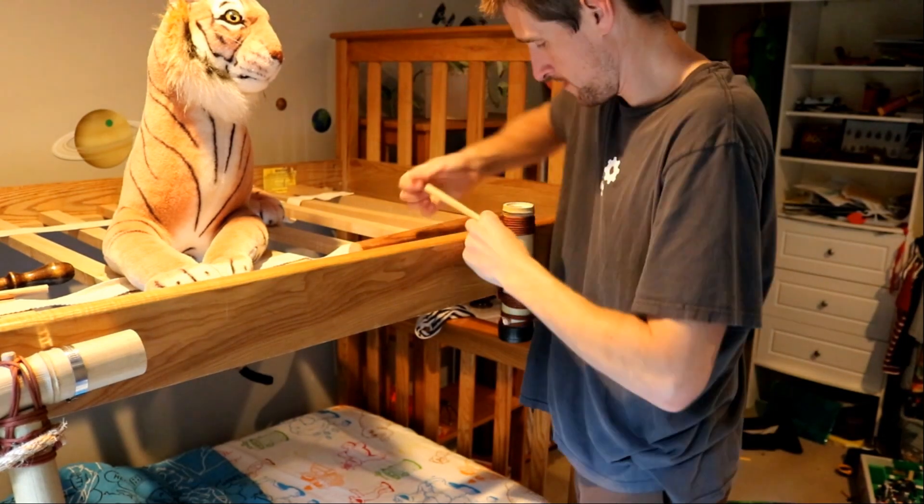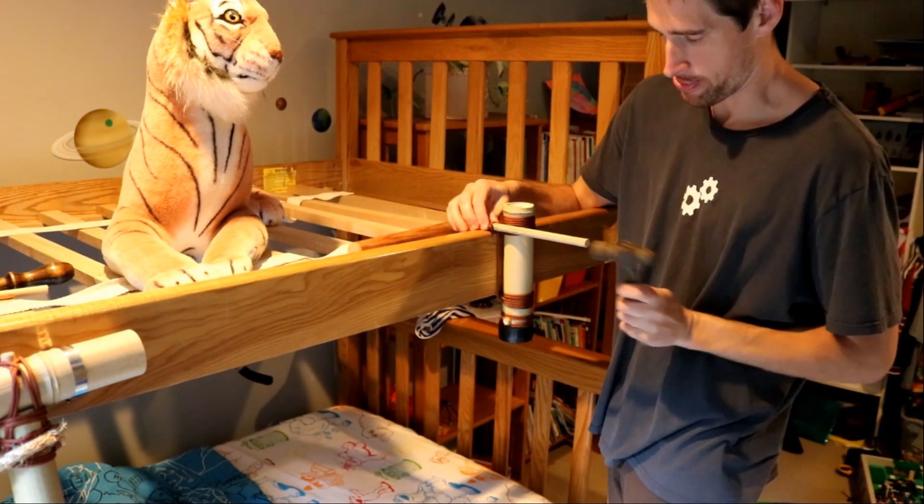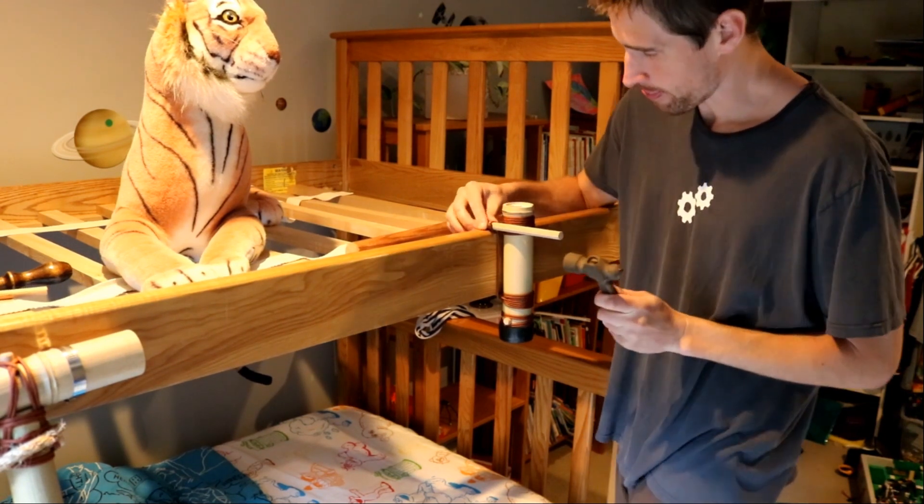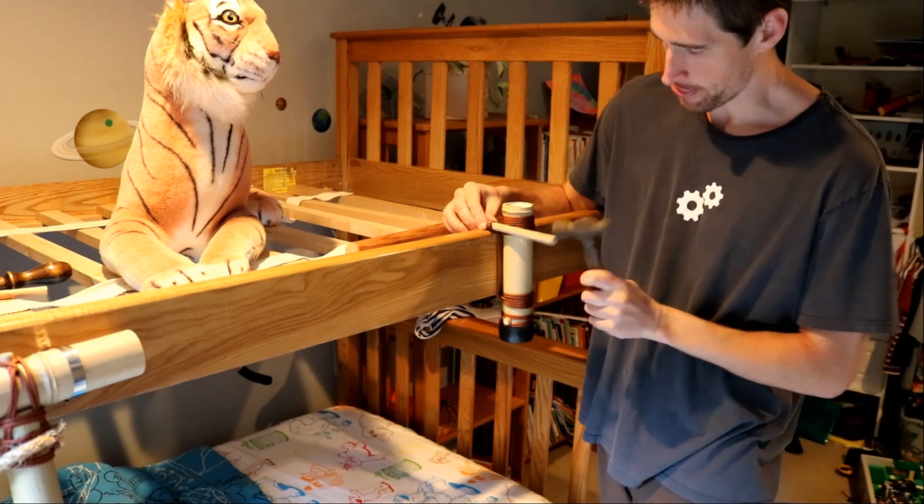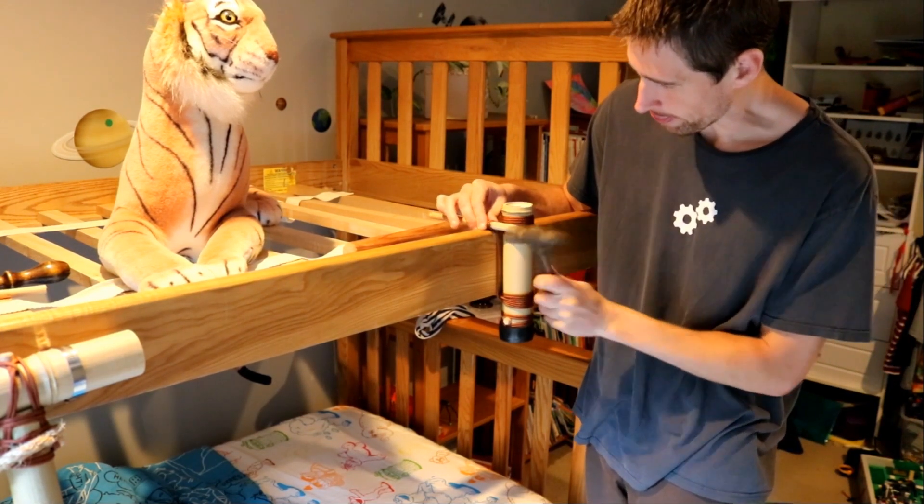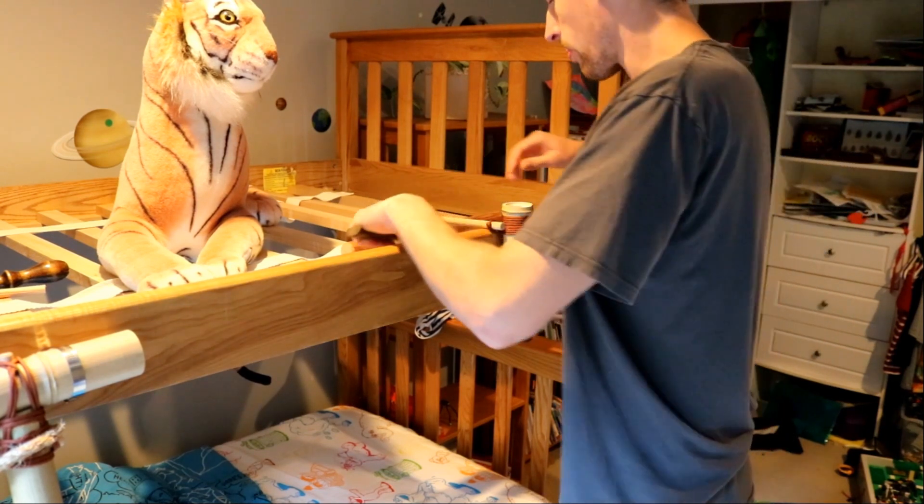All right so I've turned the dowel a few times and it's starting to get so tight that you need to whip out a little hammer. See what I'm doing there? I'm hammering this dowel through so I can make another half turn. Pretty clever, huh?